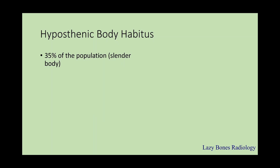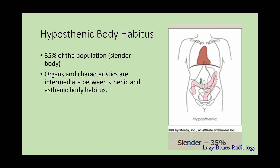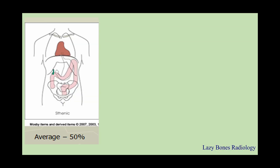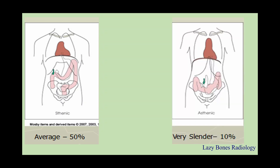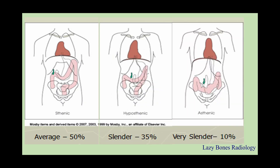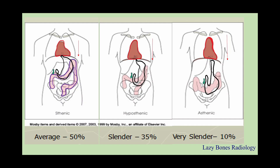Hyposthenic body habitus is roughly 35% of the population and has a slender build. The organs and characteristics are intermediate between the sthenic and asthenic body habitus, so it's very difficult to classify. The sthenic is your average, the asthenic is your very slender population, and the hyposthenic is right in the middle. As you go from sthenic to asthenic, the organs shift down — the heart becomes more elongated, and the stomach, gallbladder, and colon all shift downward as well.